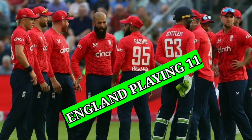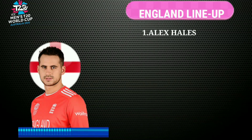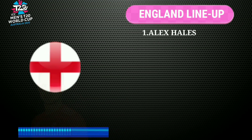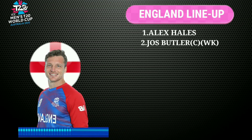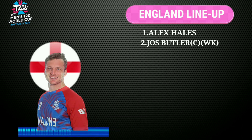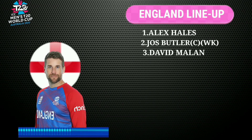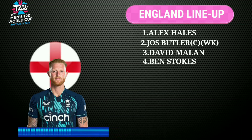England team final playing 11. Number one: Alex Hales, right-handed batsman. Number two: Jos Buttler, captain and wicketkeeper batsman. Number three: David Malan, left-handed batsman. Number four: Ben Stokes, all-rounder.